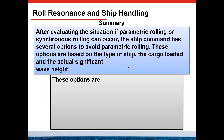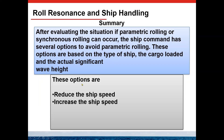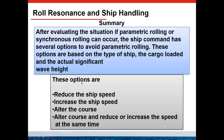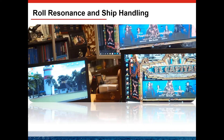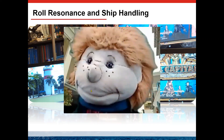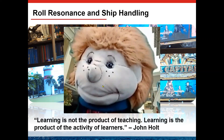In summary, after evaluating whether parametric or synchronic rolling can occur, we have several options to avoid these resonances without changing GM. Changing GM would change the natural rolling period and therefore shift the danger zones. The options are: reduce speed, increase speed, alter course, or alter course and adjust speed at the same time. As John Holt said, learning is not the product of teaching — learning is a product of active learners. Thank you for watching this video lesson.